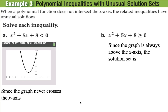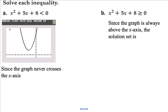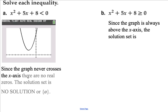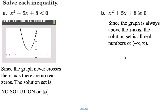When a polynomial function doesn't intersect the x-axis, some special things happen. For example, x squared plus 5x plus 8 is less than zero. Since it doesn't touch the x-axis, there are no real zeros. This asks where it's less than zero — where is it negative? Well, it never gets negative, so we have the empty set, or no solution. With the same function asking where it's greater than or equal to zero: it's always above the x-axis, so the answer is all real numbers from negative infinity to infinity.